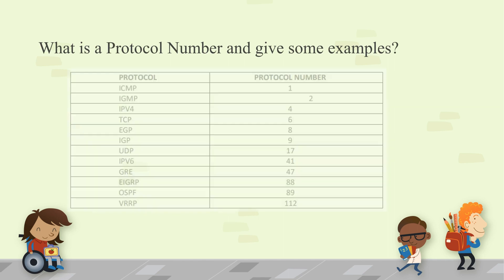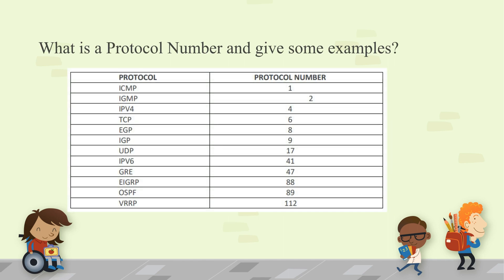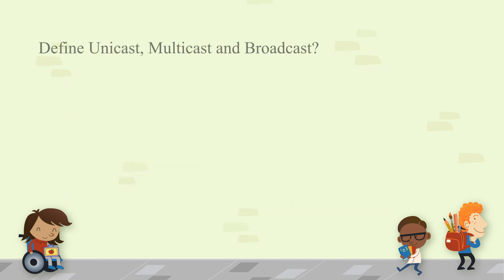Protocol numbers: ICMP is 1, IGMP is 2, IPv4 is 4, and TCP protocol number is 6. When capturing packets in Wireshark, the protocol number is added in the TCP header. Based on that we can identify the protocol — protocol number 6 means TCP, protocol number 17 means UDP.